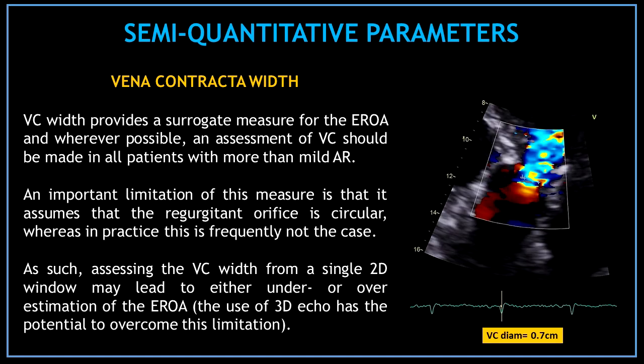Vena contracta width provides a surrogate measure for the effective regurgitant orifice area and, wherever possible, an assessment of vena contracta should be made in all patients with more than mild aortic regurgitation. An important limitation of this measure is that it assumes the regurgitant orifice is circular, whereas in practice this is frequently not the case. Assessing the vena contracta width from a single 2D window may lead to either under- or overestimation of the effective regurgitant orifice area. The use of 3D echo has the potential to overcome this limitation.